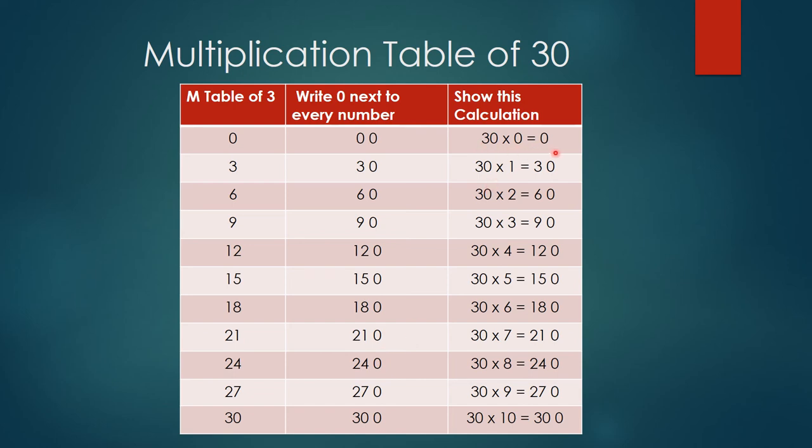30×0=0. Any number multiplied by 0 is 0. 30×1=30, 30×2=60, 30×3=90, 30×4=120, 30×5=150, 30×6=180, 30×7=210, 30×8=240.